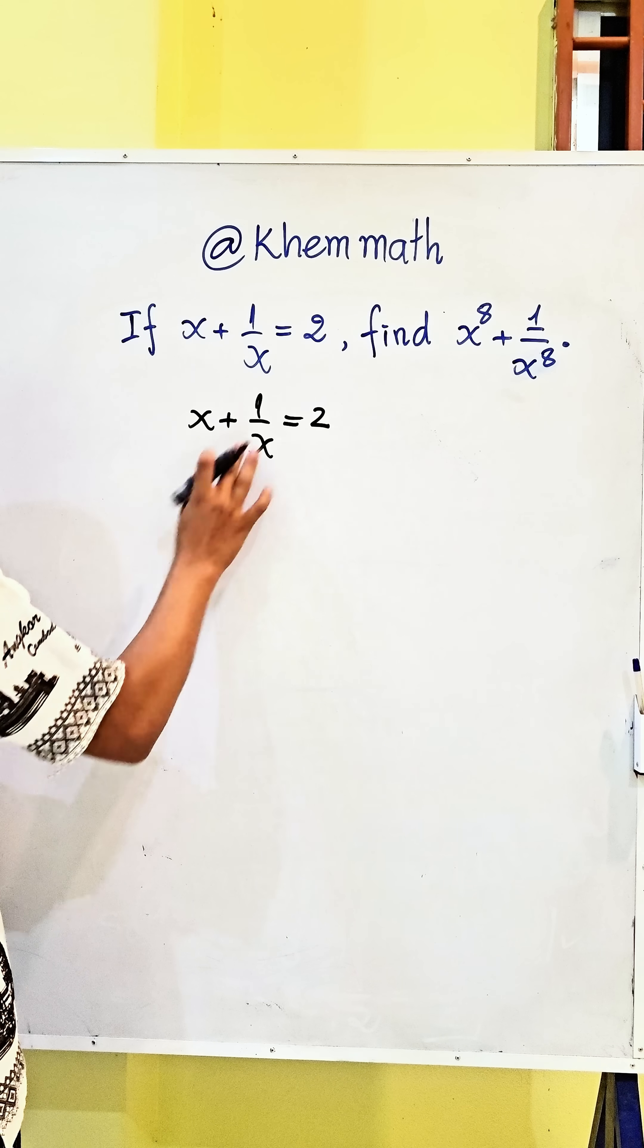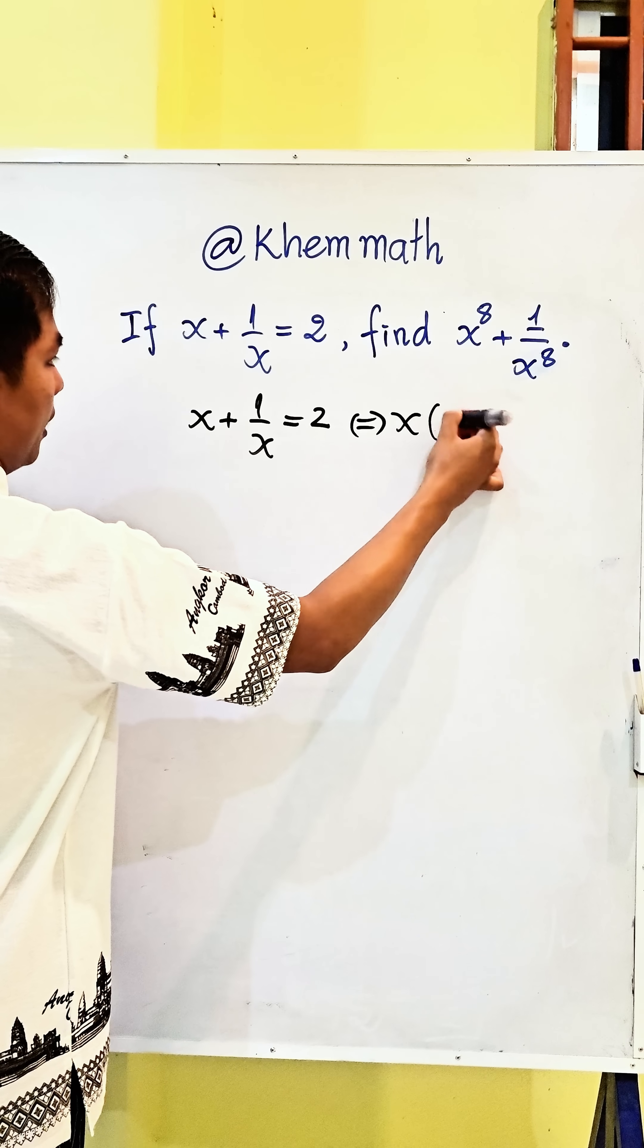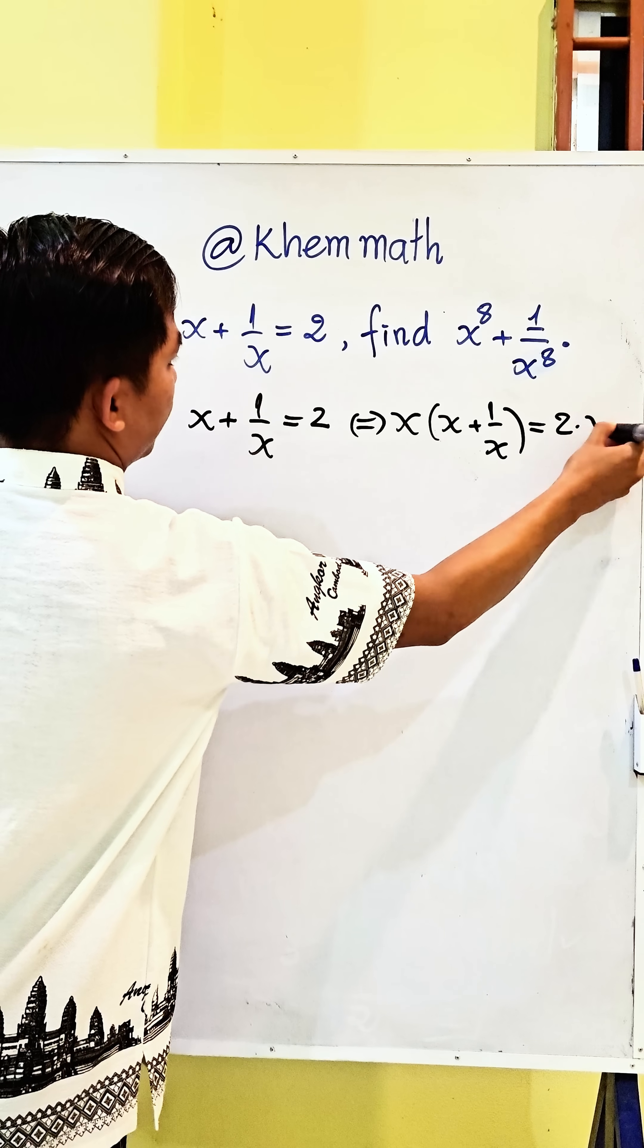Now I multiply both sides of this equation with x. So we get x times x plus 1 divided by x equals 2 times x.